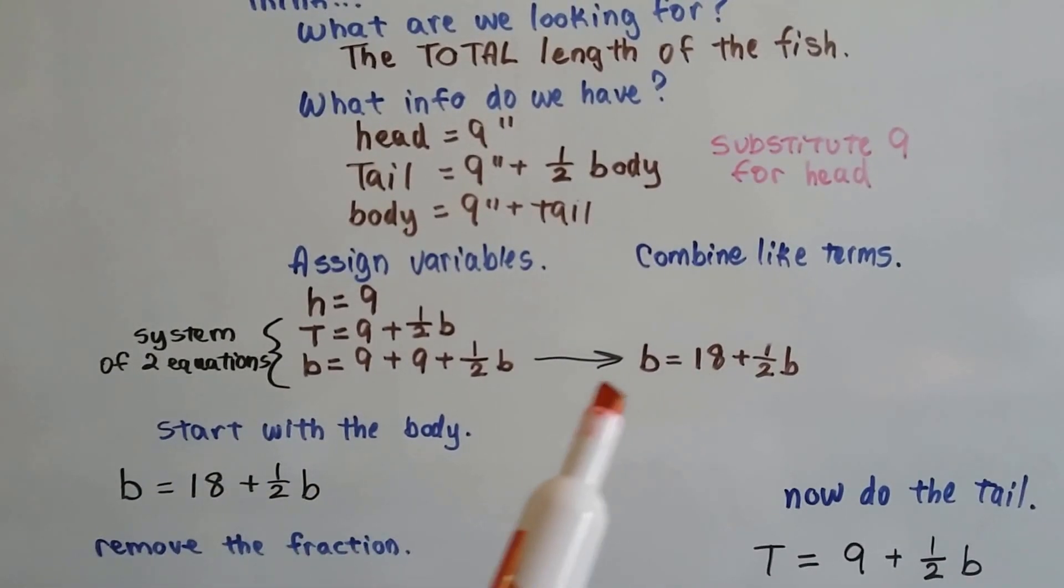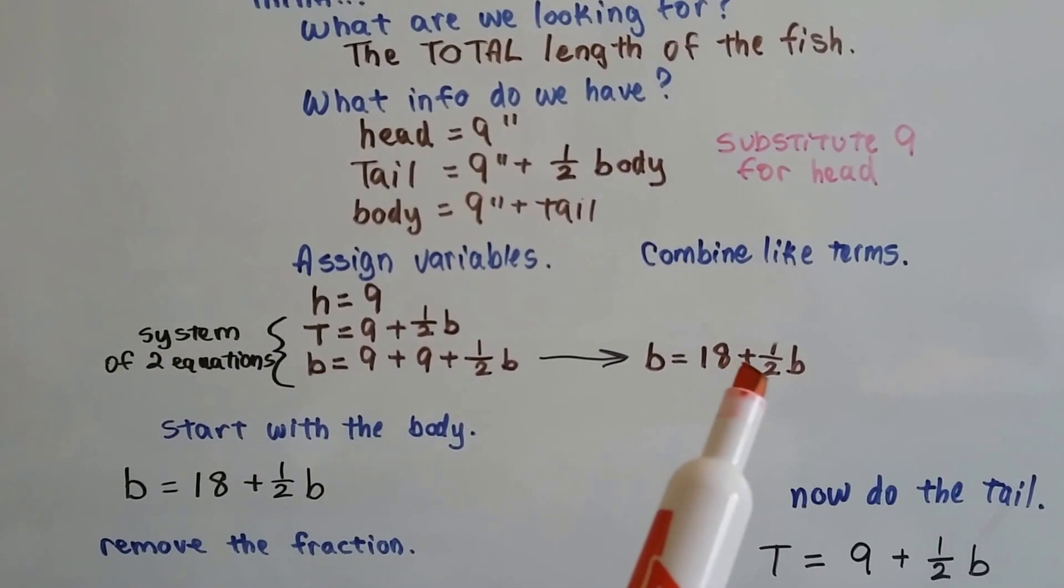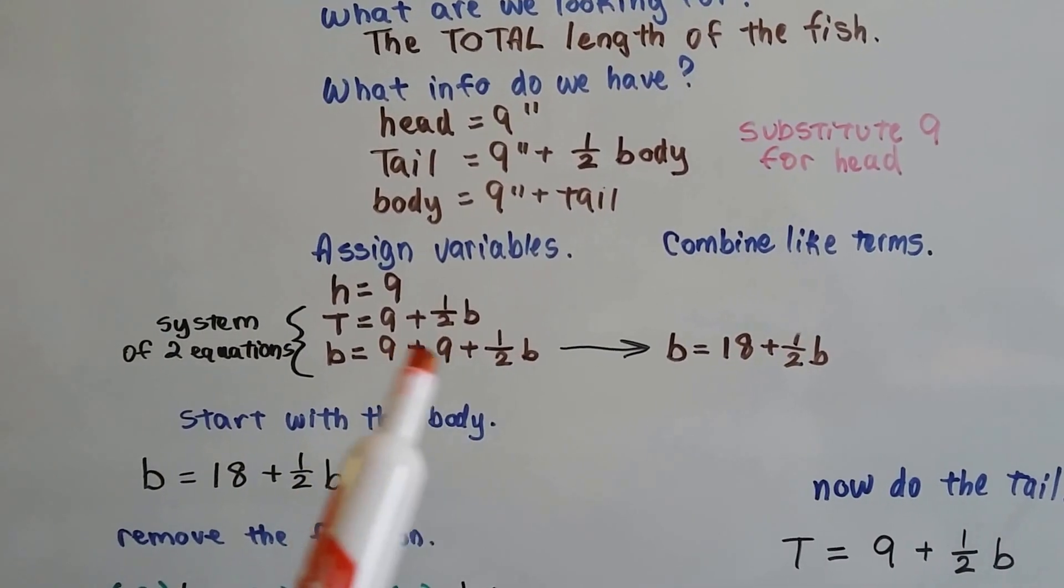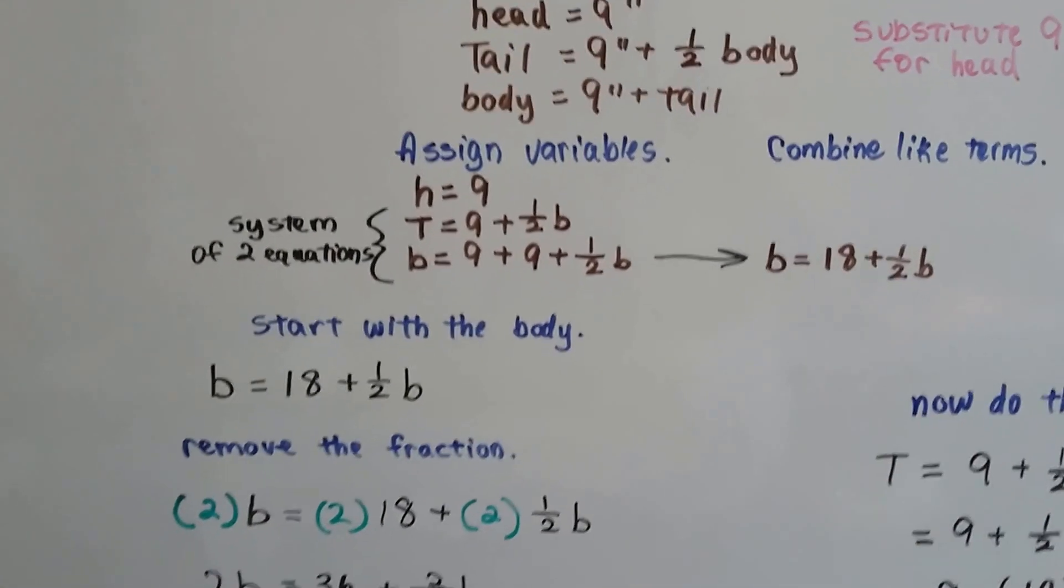We can combine these like terms so that the body is 18 plus half b, the nine plus nine. So let's start with this body.